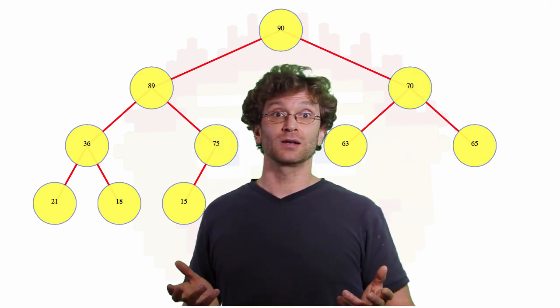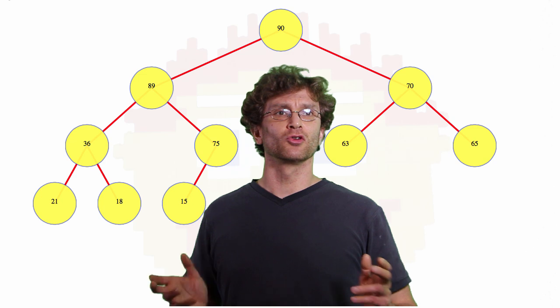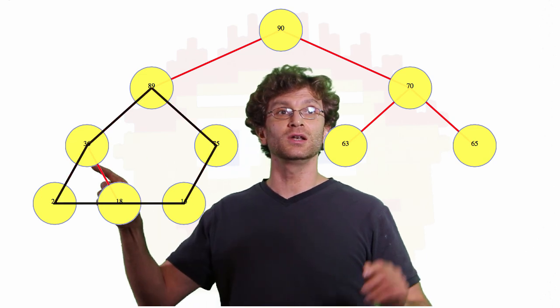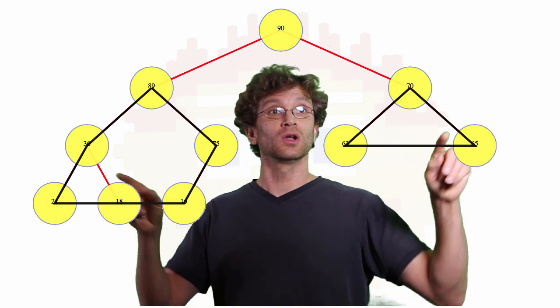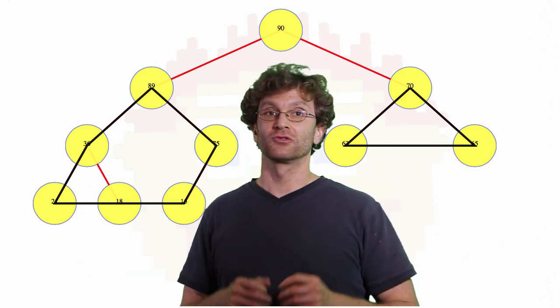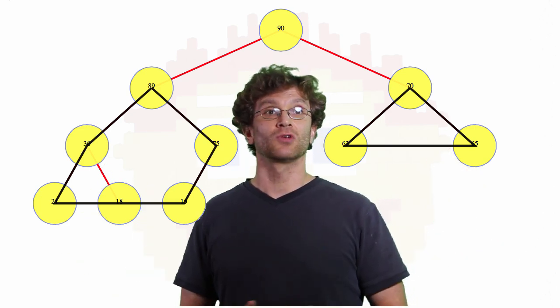That's the second property. And notice, if we have those two properties together, we get something nice. Every node is actually the root of its own sub-heap. It has the right shape, it has the right values, everything is nice.